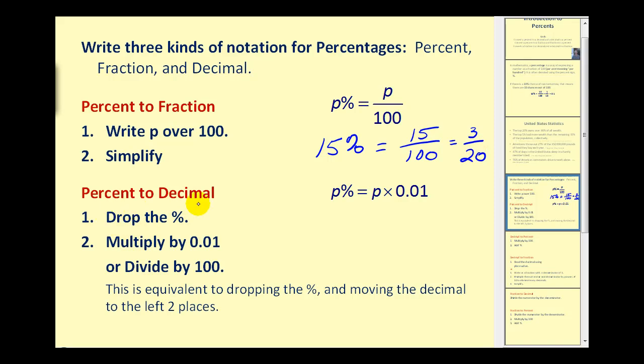Next, to convert a percent to a decimal, we drop the percent sign and then either multiply by 0.01 or divide by 100. The effect is the same. The shortcut is to drop the percent sign and move the decimal to the left two places. So for example, if I have 8.3 percent in decimal form, I'll drop the percent sign and move the decimal to the left twice. One, two, and that would produce the decimal .083. Again, the decimal started here and we moved it left twice or divided by 100 and then we drop the percent sign.